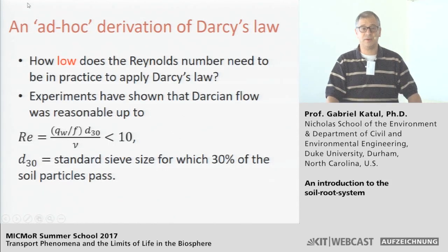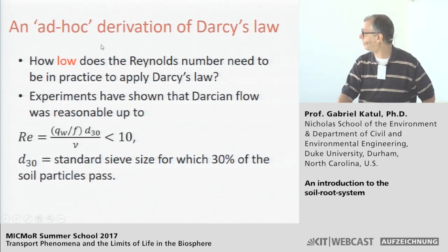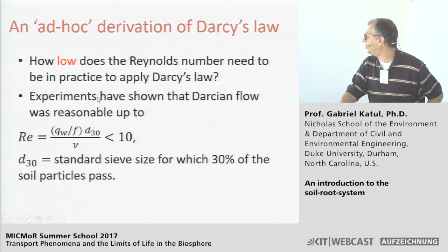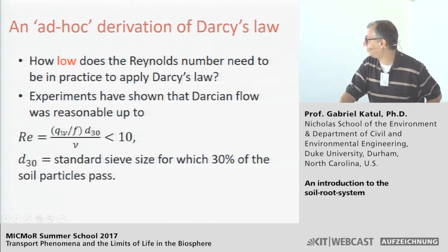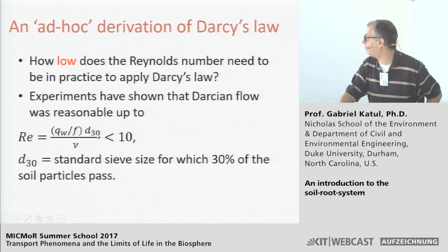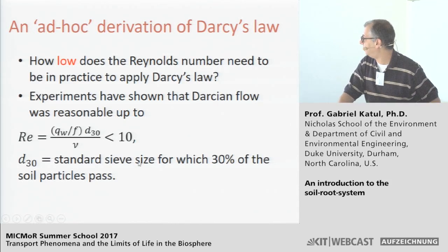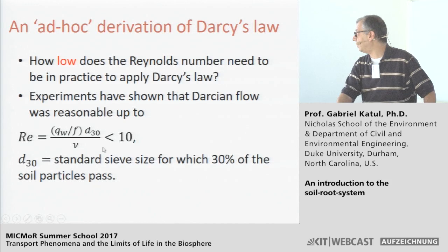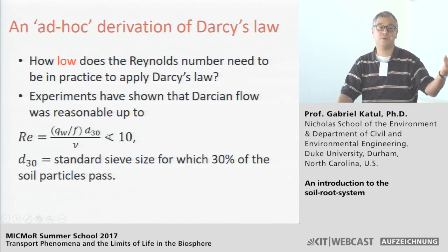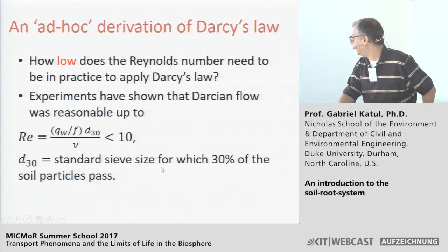How low is 'low' for applying Darcy's law? It has been shown theoretically and experimentally that Darcy's law remains reasonable up to Reynolds numbers less than 10, where the Reynolds number is defined as (flux/porosity) × D30 / ν. Here D30 is the sieve size through which 30% of soil particles pass — the characteristic particle diameter — and ν is the kinematic viscosity of the flow.